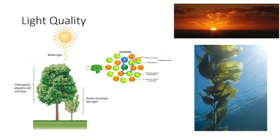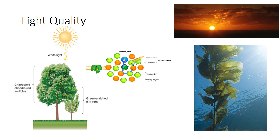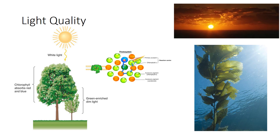Photosynthesis is affected by the environment. From a plant's viewpoint, light has three important properties: quality, quantity, and duration.